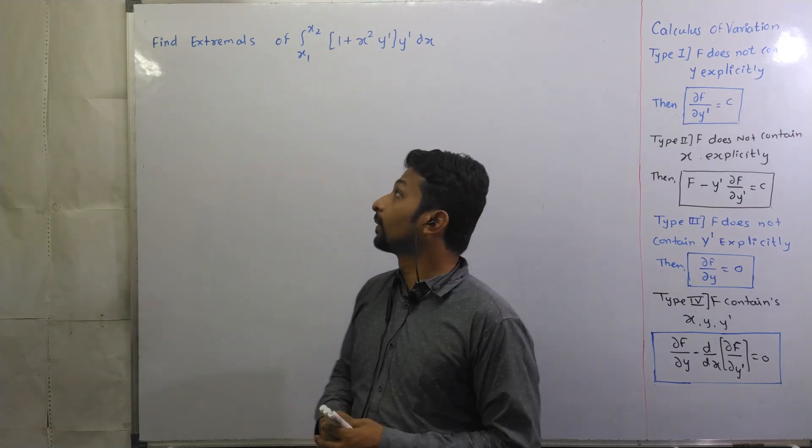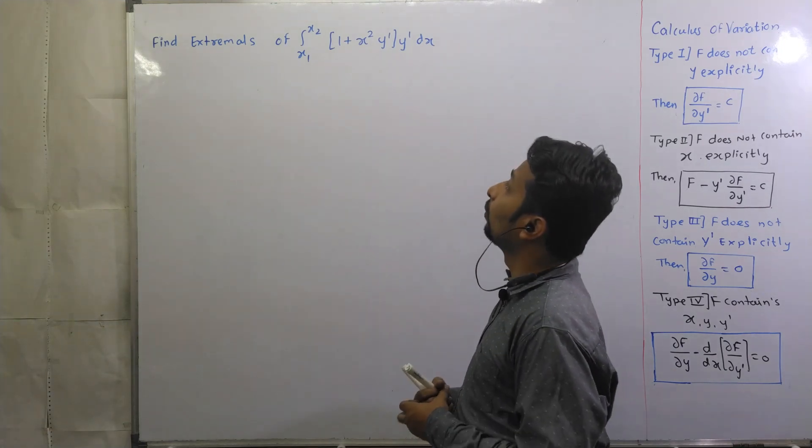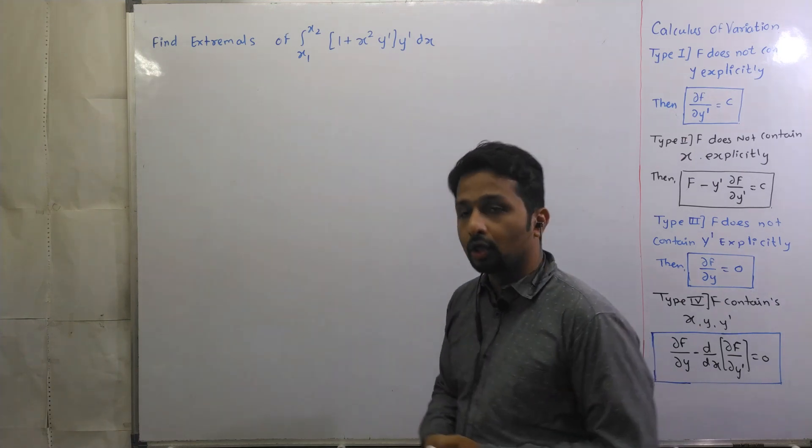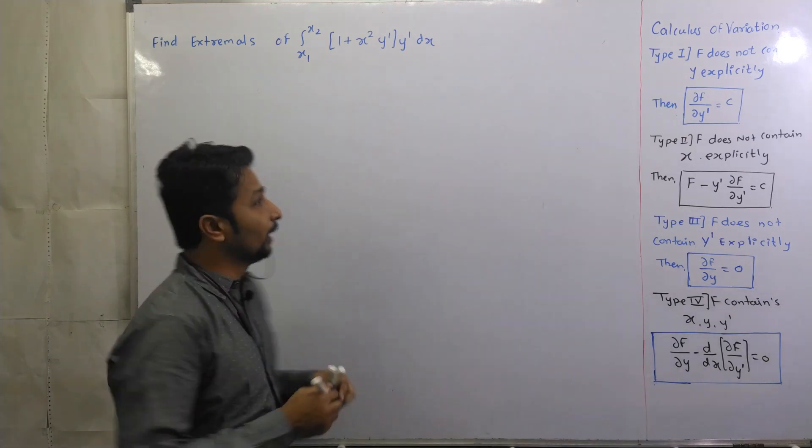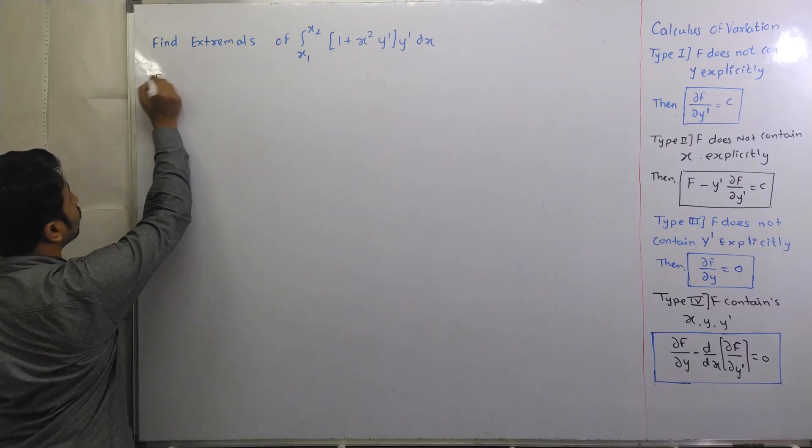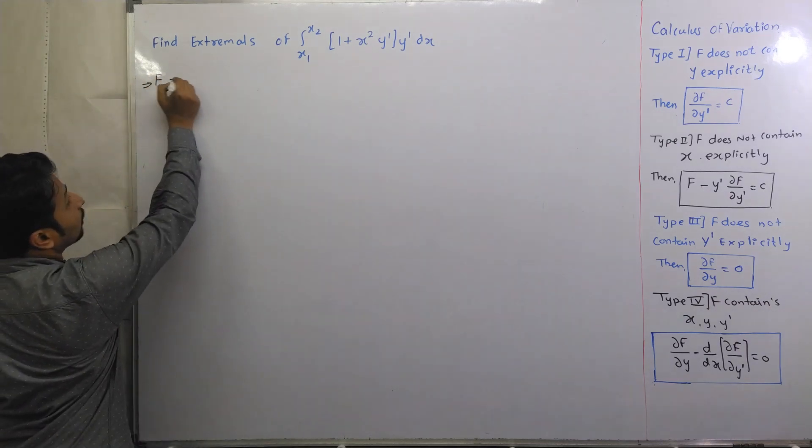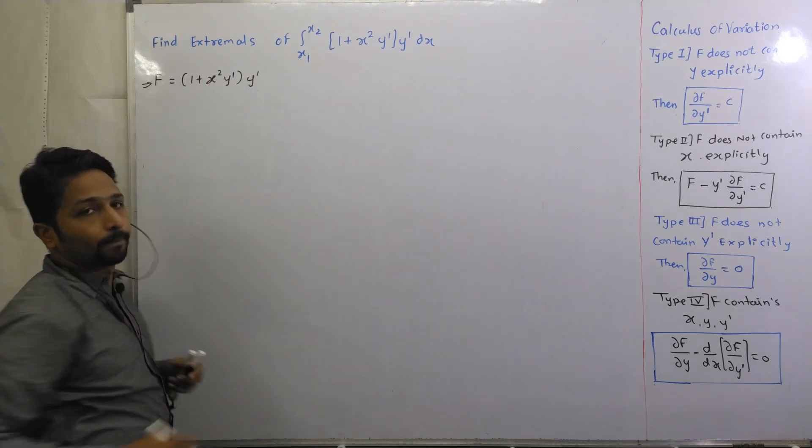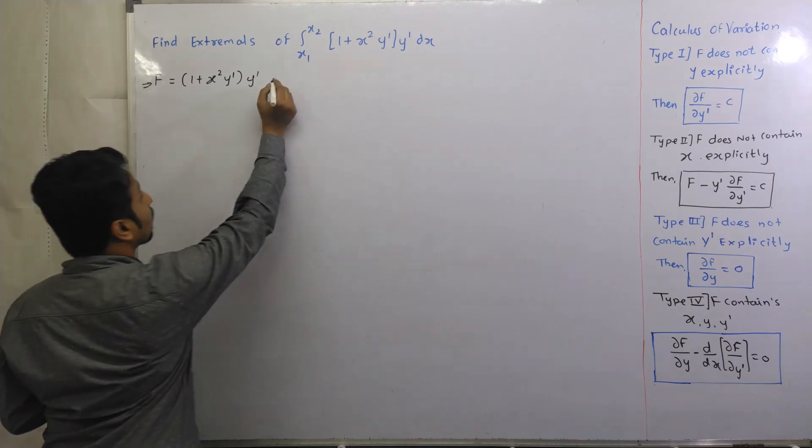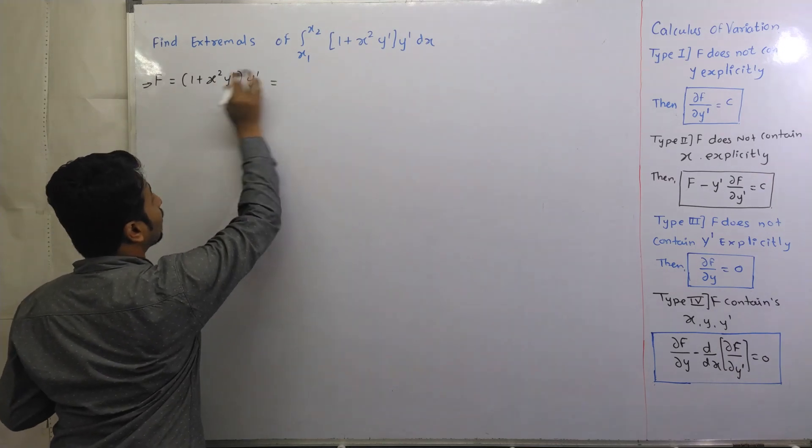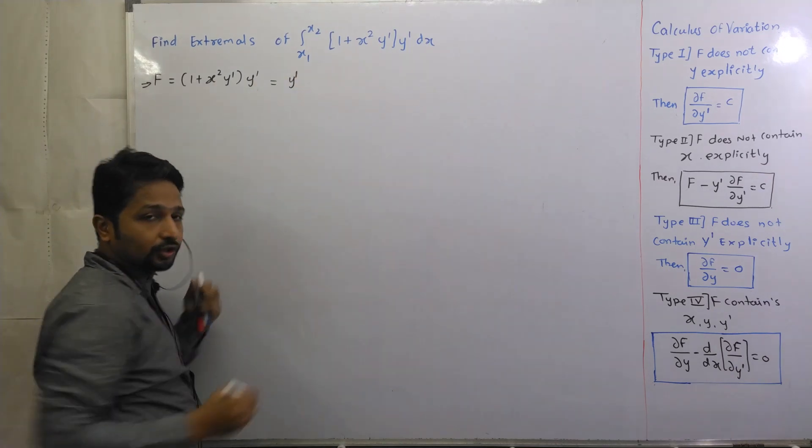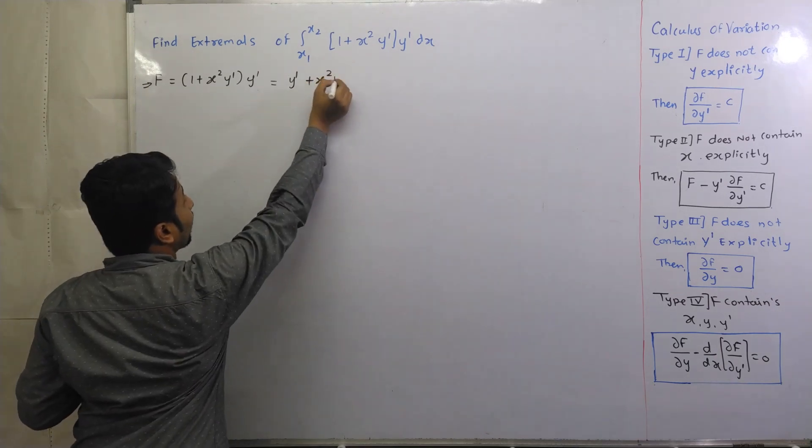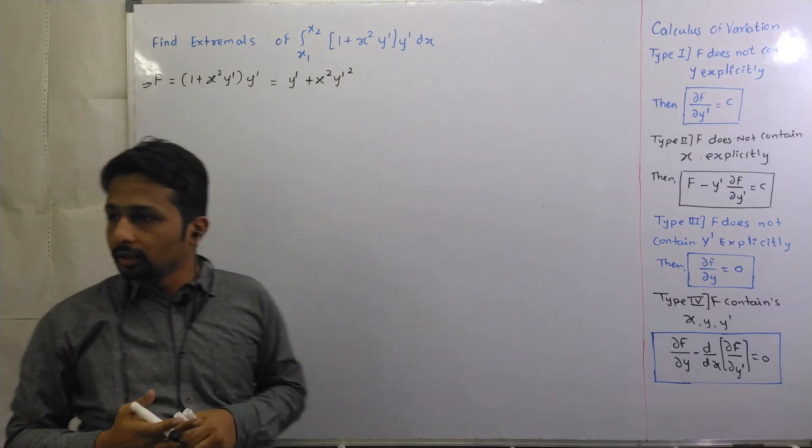The question is, find extremals of integral 1 plus x square y dash into y dash dx. So you have a main function that f is equal to 1 plus x square y dash into y dash. If y dash multiply it, then how is it? So, 1 into y dash y dash plus x square y dash square. Okay?